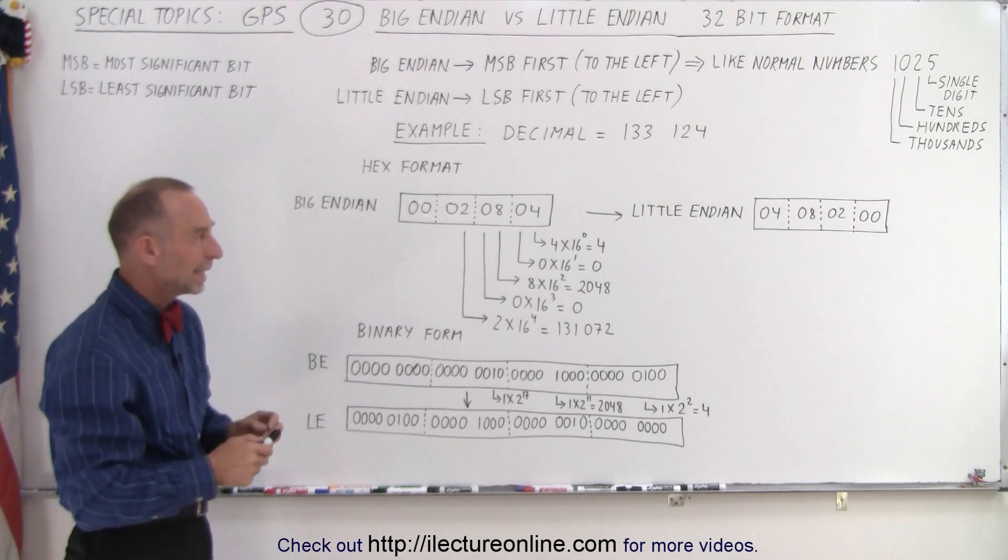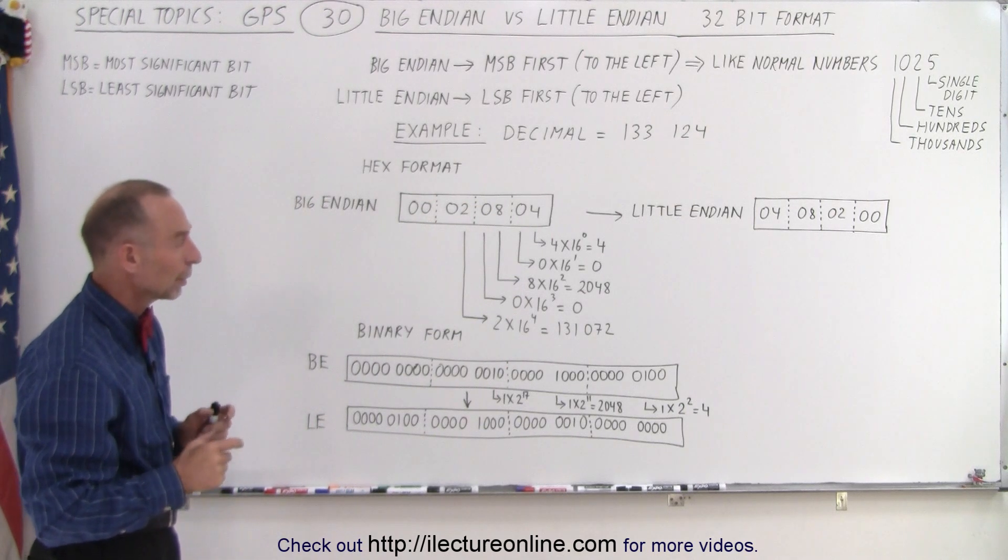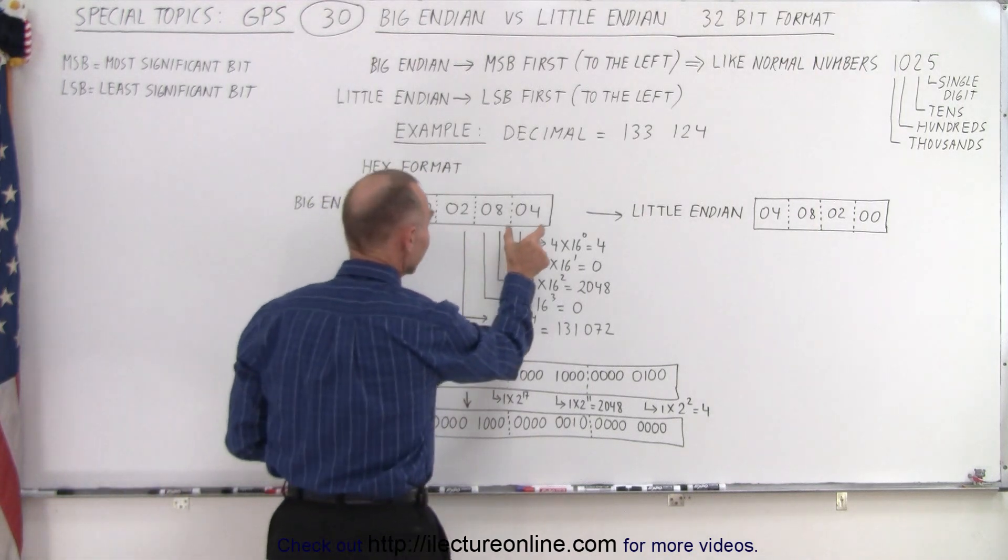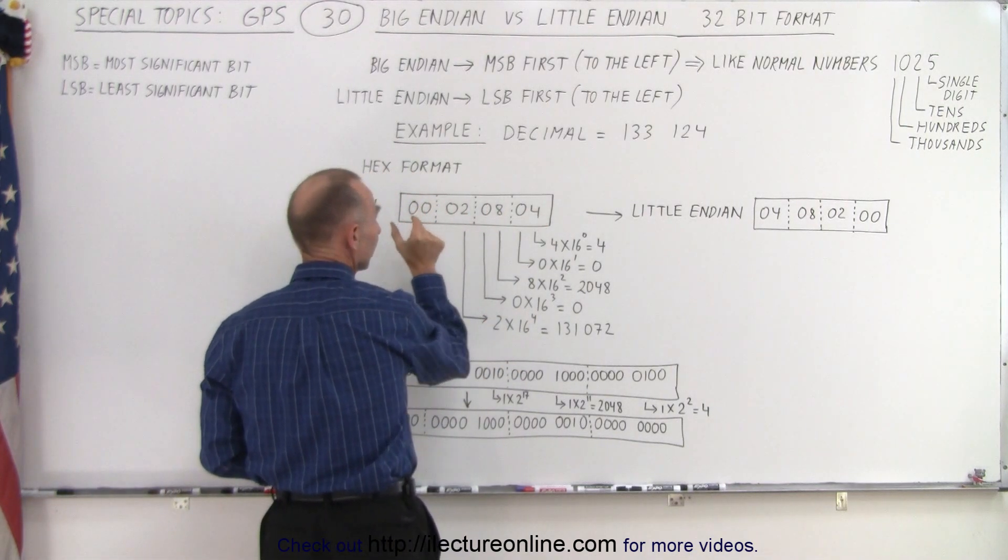How do we convert that to the Little Endian format? Well notice we move four bits at a time so we take the last eight bits and move them to the front.